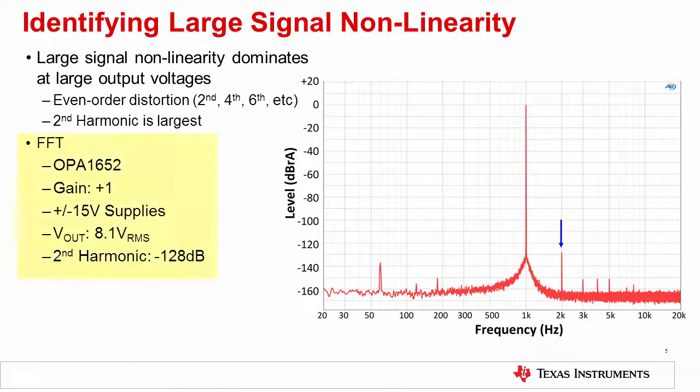This plot shows a measured FFT for an OPA1652 with plus minus 15 volt supplies and a gain of plus 1. The output signal is fairly large at 8.1 volts RMS or 11.5 volts peak. Examining the output FFT, we can see that the second harmonic is by far the largest. This type of result is indicative of large signal output stage distortion. In general, the second harmonic will be the largest, although you may see other even order harmonics as well.